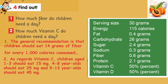Exercise 4. Find out. 1. How much fiber do children need a day? Eat 14 grams of fiber for every 1,000 calories consumed. 2. How much vitamin C do children need a day? Children aged 1 to 3 should eat 15 milligrams; 4 to 8-year-olds should eat 25 milligrams; and 9 to 13-year-olds should eat 45 milligrams.